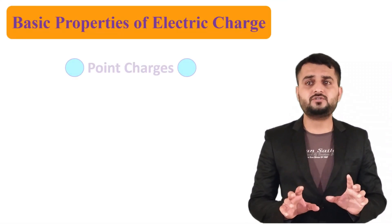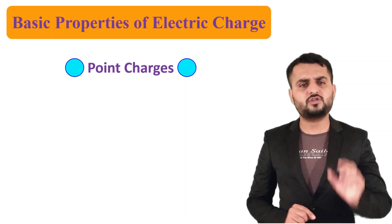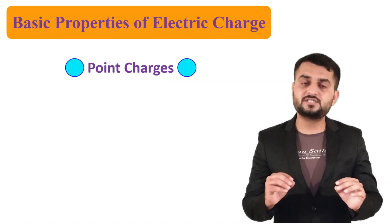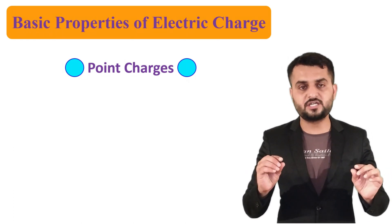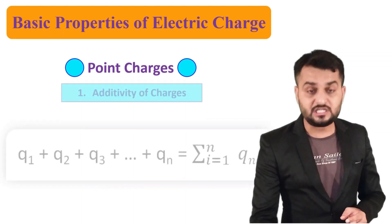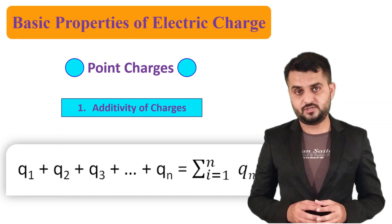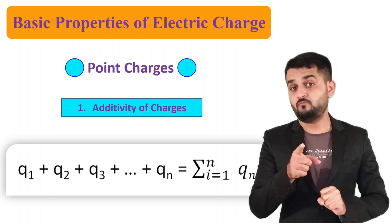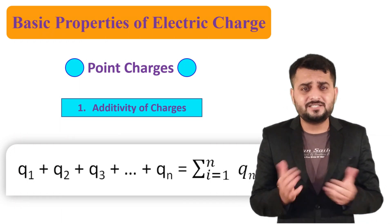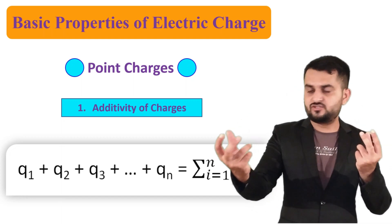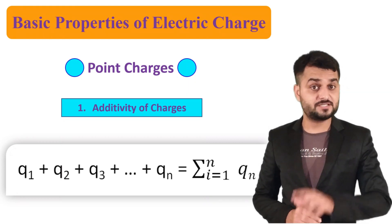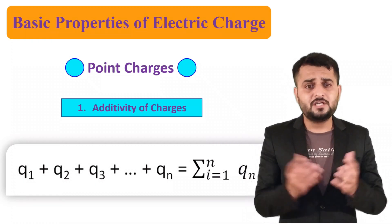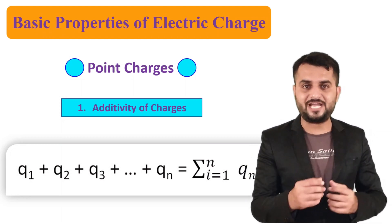Moving to the properties of electric charges. First, a concept of point charges: when two bodies have electric charge and their dimensions are smaller compared to the distance between them, we consider them as point charges. The first property is additivity of charges — charges obey simple rules of algebra. If you have two positive charges and three positive charges, the total charge is five positive charges. If you have five positive charges and six negative charges, the total is minus one. The equation is: Q = q1 + q2 + q3 + ... + qn, which equals the summation from i=1 to n of qi.